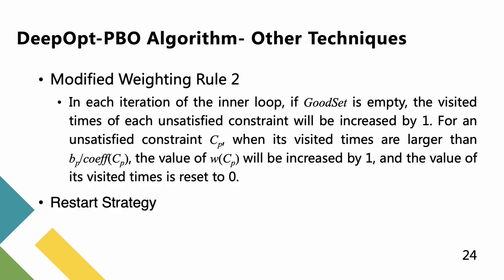By increasing the weight of unsatisfied constraints, we can accurately guide the search process toward more efficient directions. In each iteration of the inner loop, if good set is empty, the visited time of each unsatisfied constraint will be increased by 1. For an unsatisfied constraint Cp, when its visited times are larger than bp divided by COF(Cp), the value of w(Cp) will be increased by 1, and the value of its visited times is reset to 0.